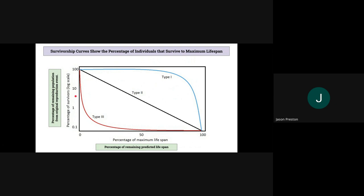So are they 100% alive, 10% alive, 1% alive, or 0.1% alive? How many of those are surviving? And then down here we have the percentage of the maximum lifespan, so this is going to be different for every organism, right?